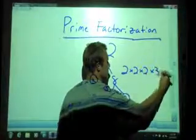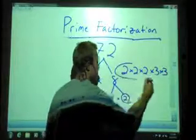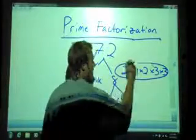So in this case, I would write, I have 3 twos, so I would write 2 times 2 times 2.